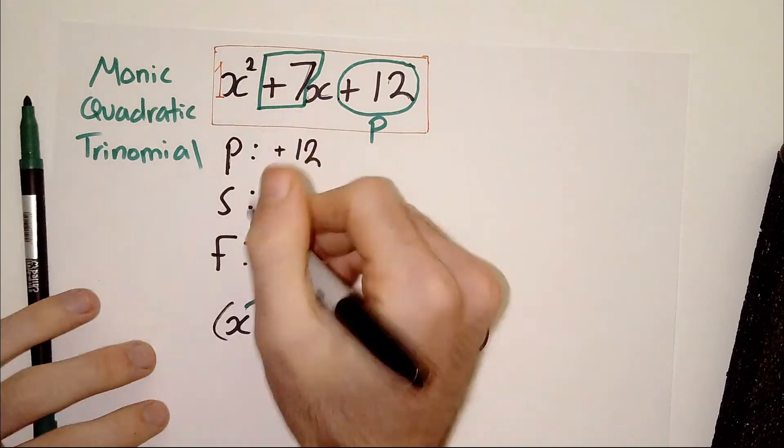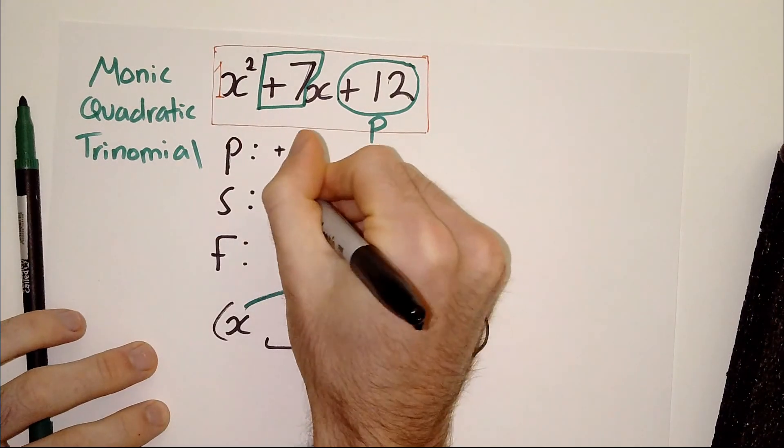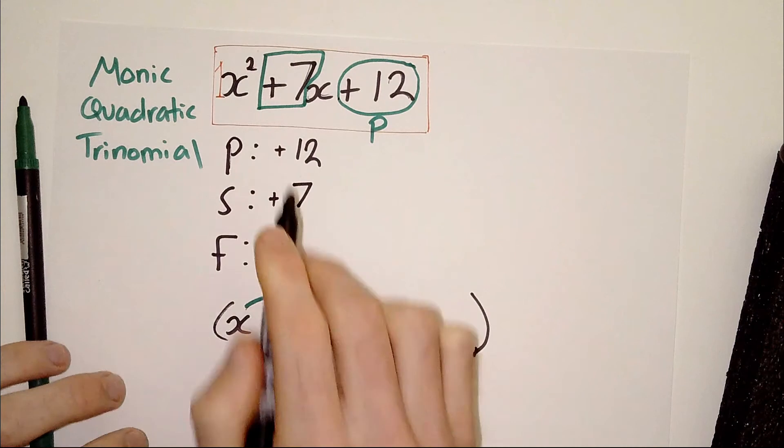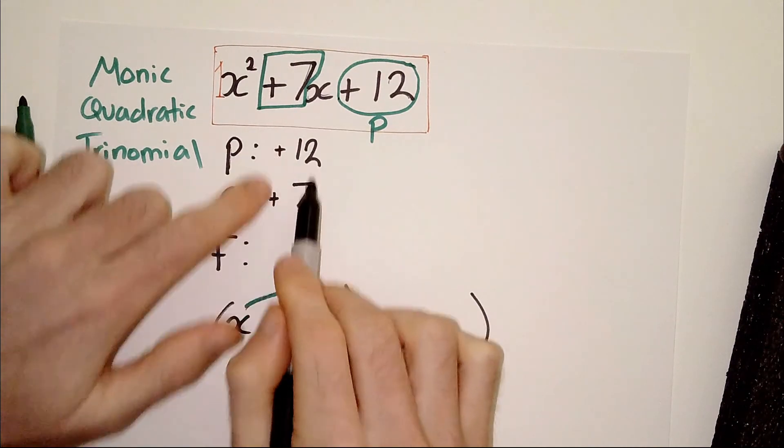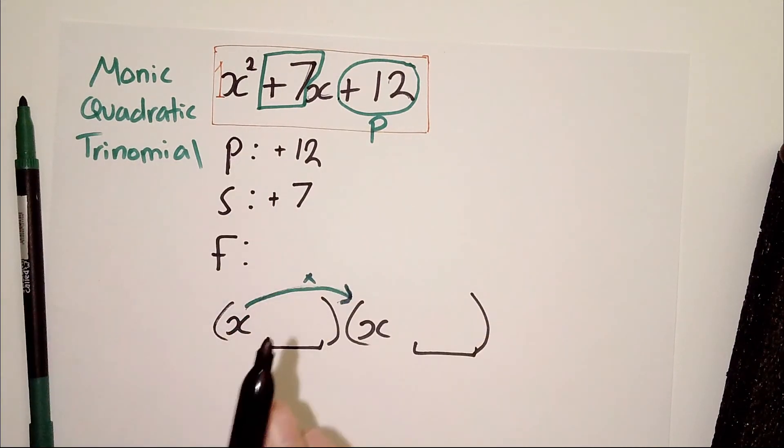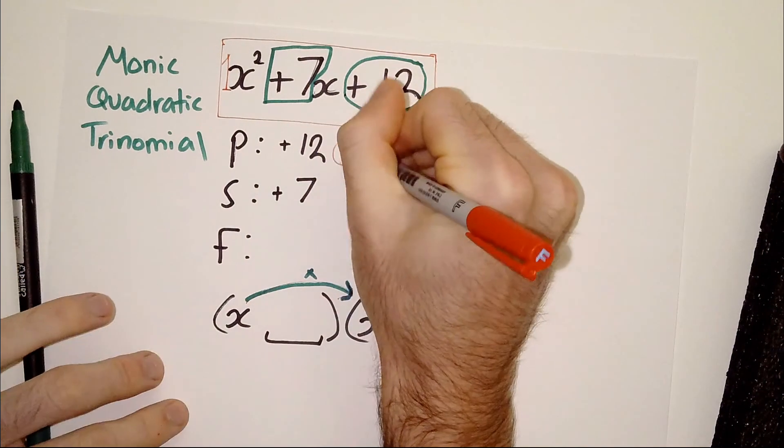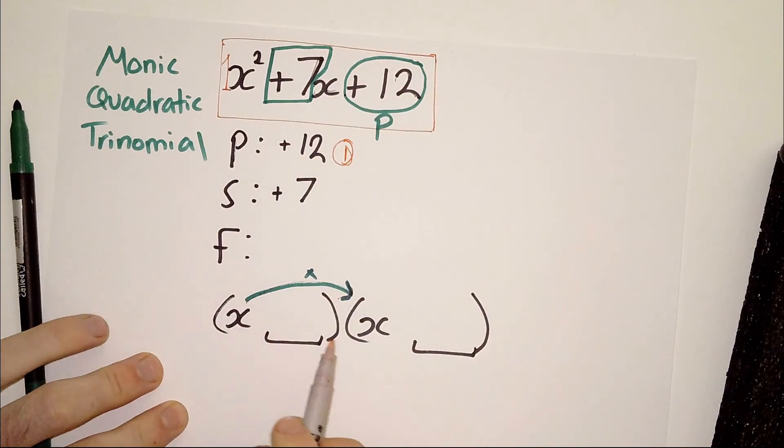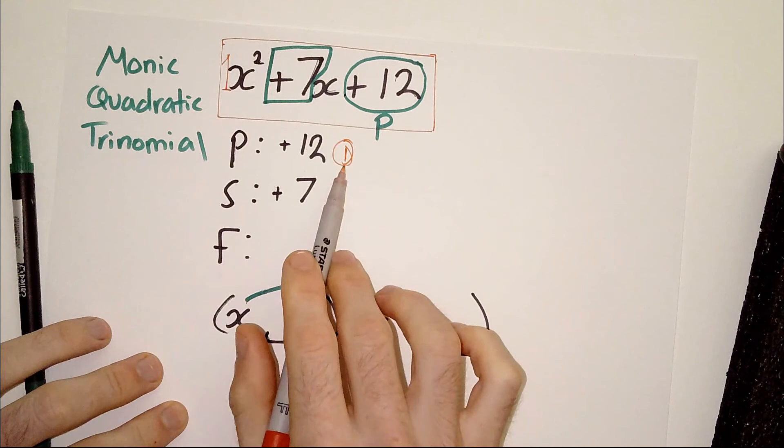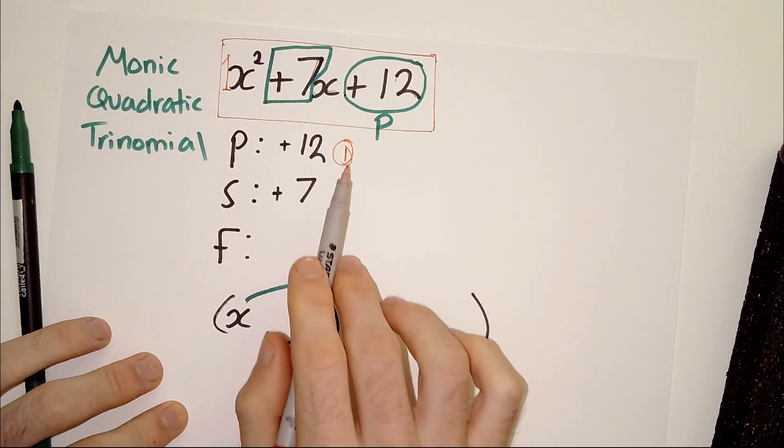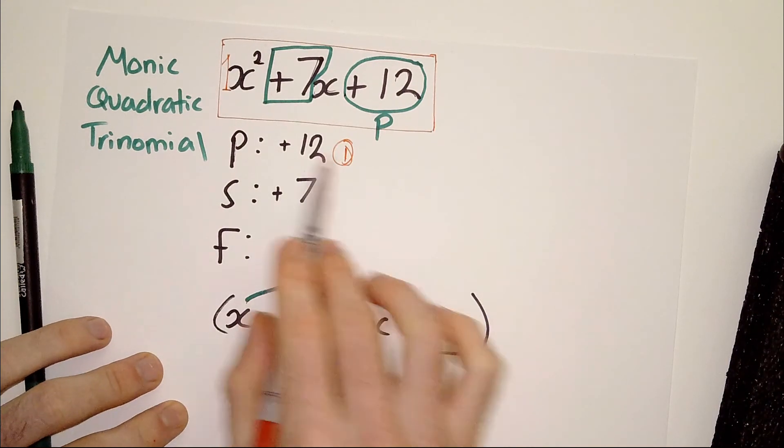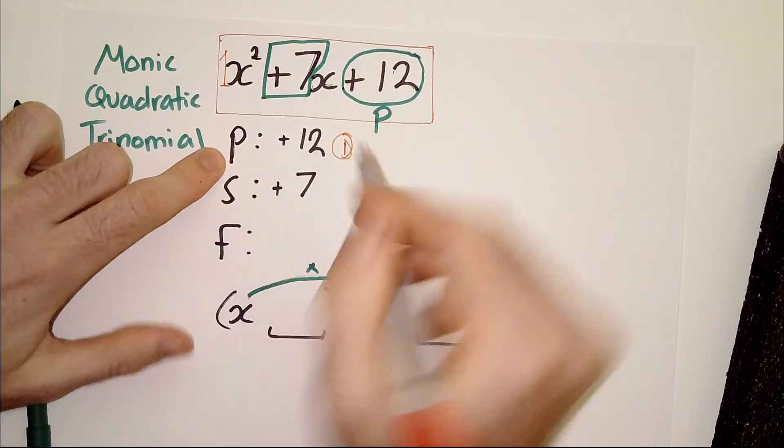Now, bear with me. The next thing we're going to do is the s. That means the sum. It will make sense in a second. The sum, the s, is going to be the term including the sign before the single x. The x that has that invisible one above it, right? Not the x squared term. So, plus seven. Remember, if it was minus seven, we would include the minus. So, we have plus seven here, okay? And then, what we do is we get these two numbers, right? And we are now ask ourselves. The first thing you want to ask yourselves is, what are...